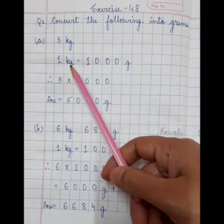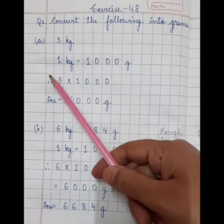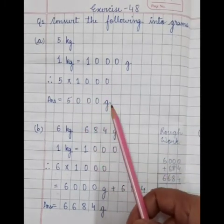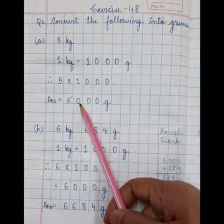First step is, 1 kg is equal to 1000 gram. Therefore, 5 multiply by 1000 is equal to 5000 gram. 5 kg is equal to 5000 gram.